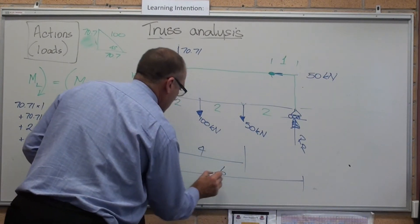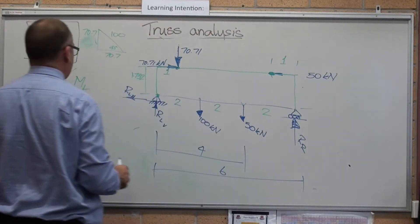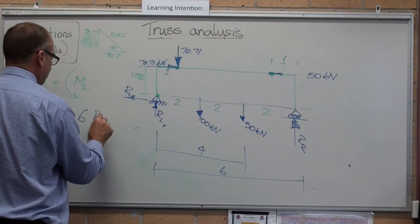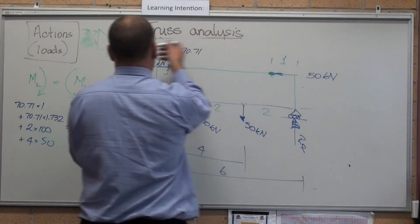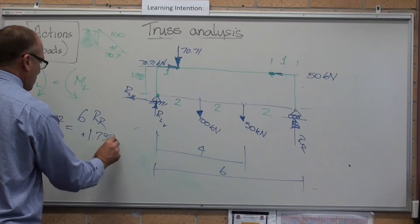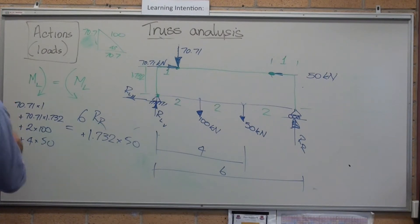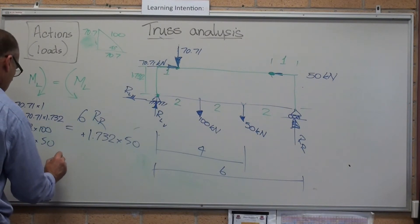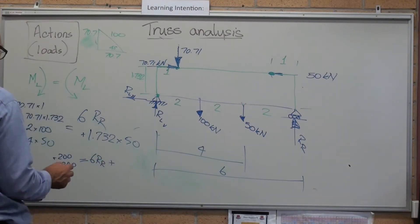Plus 6 times RR. That's over here. That's going that way. So that's going that way. And this 50 is also going anti-clockwise. Plus 1.732 times 50. So, let's now do the maths. The first one.